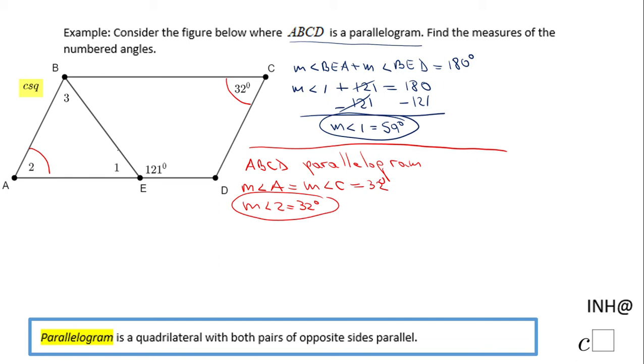Now we have one more angle: angle three. And don't forget we already know angle one, this one here, it's 59 degrees. This angle is 32. So now we're going to look in the triangle ABE.